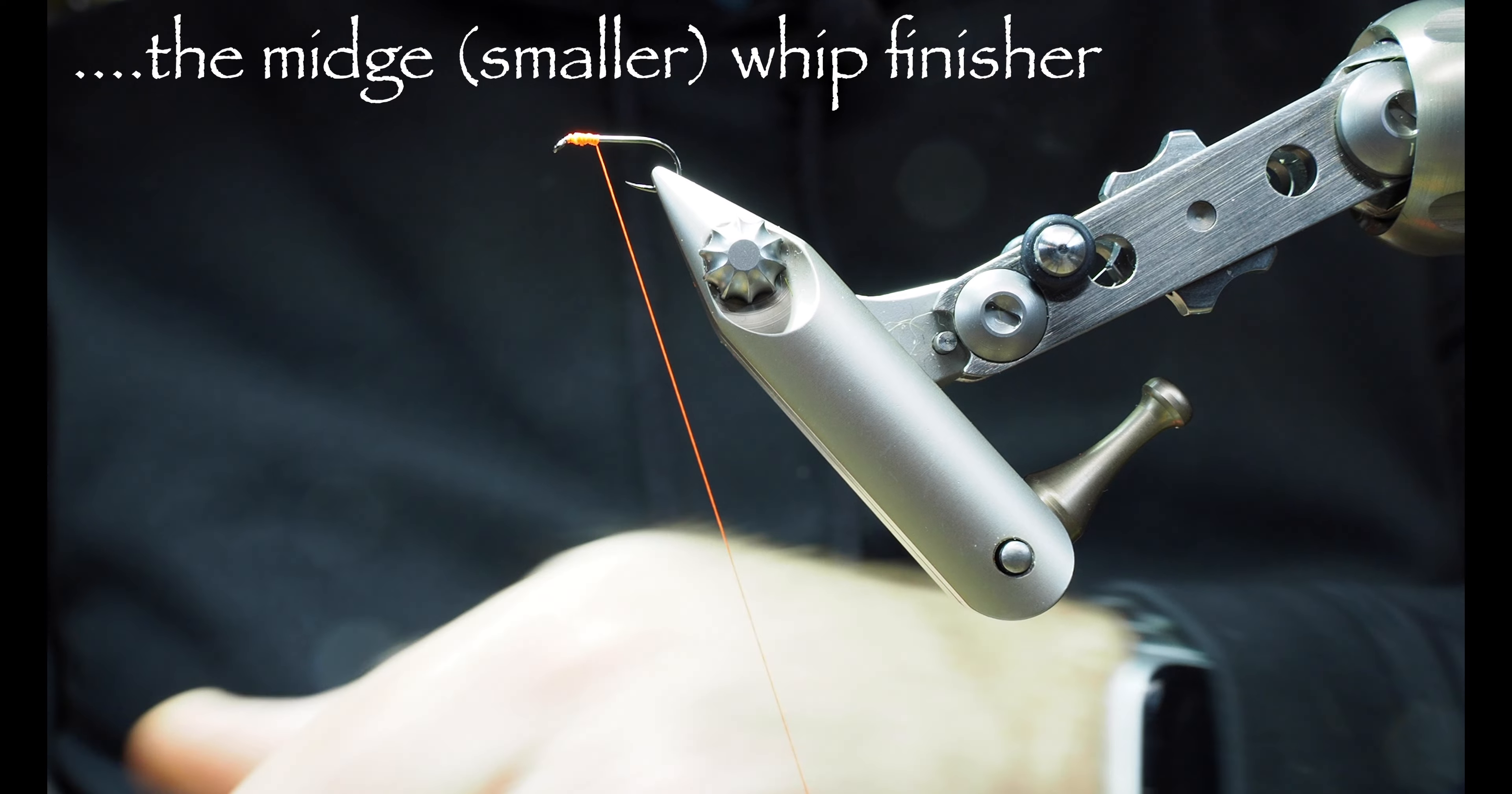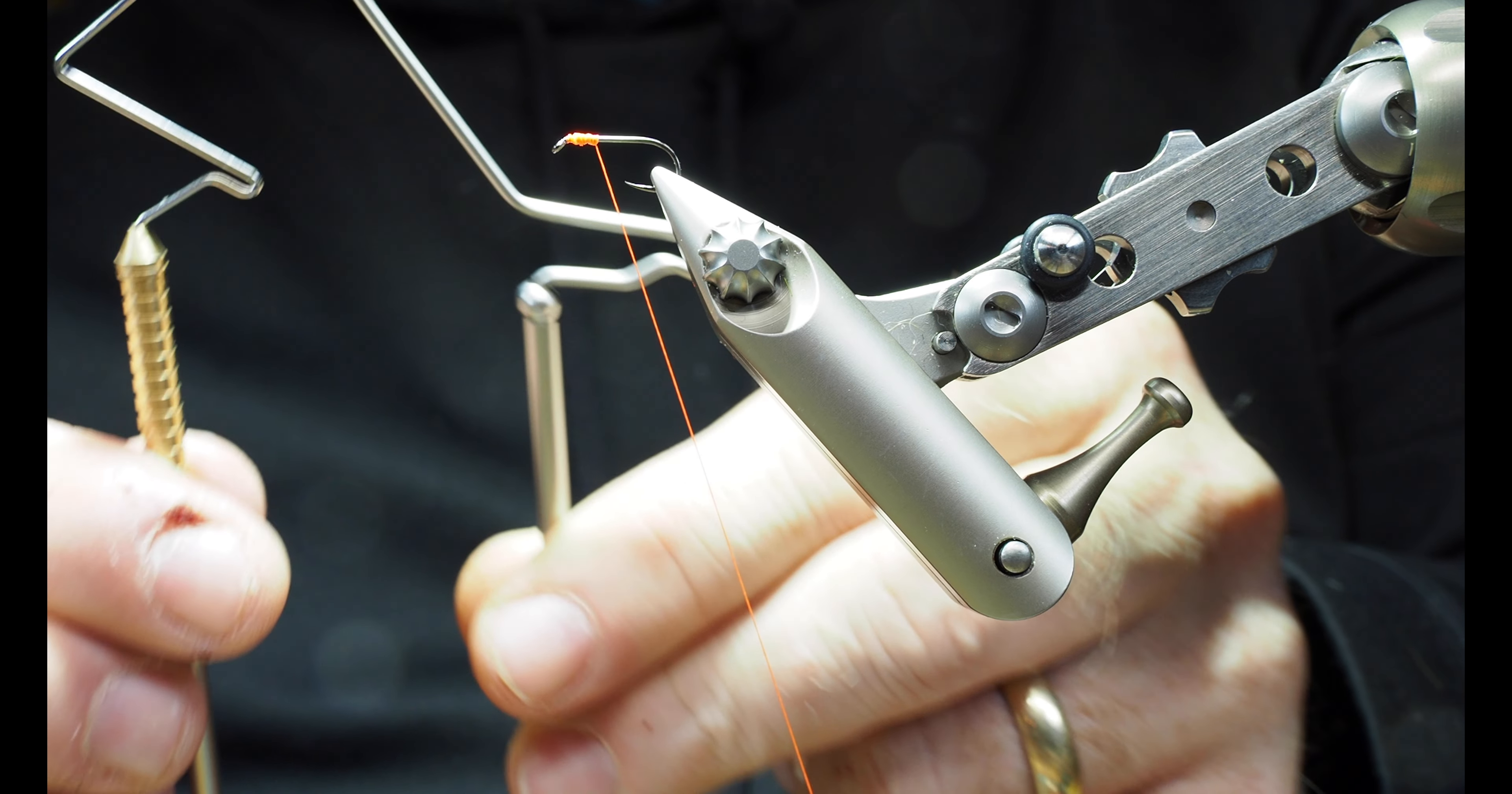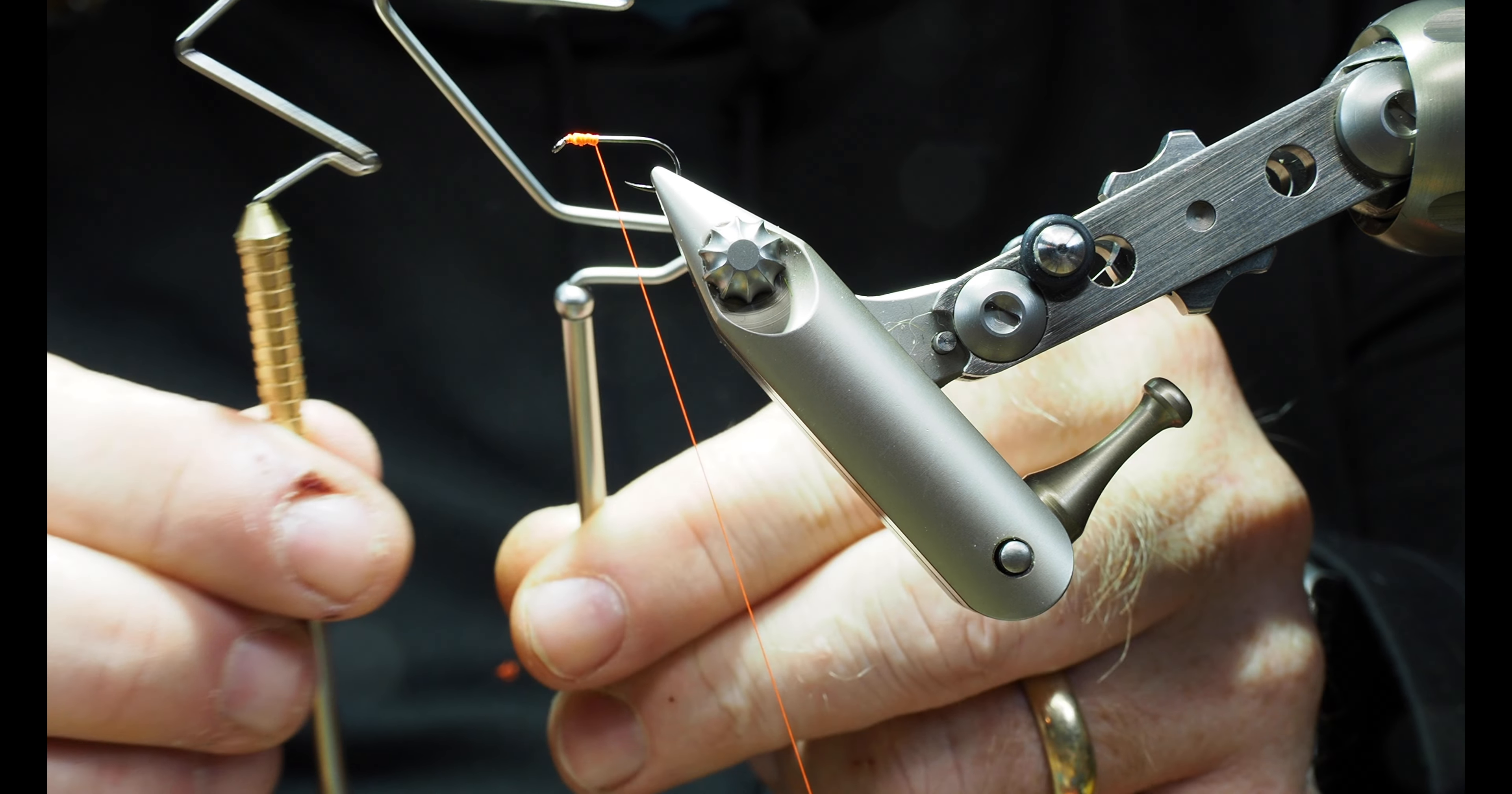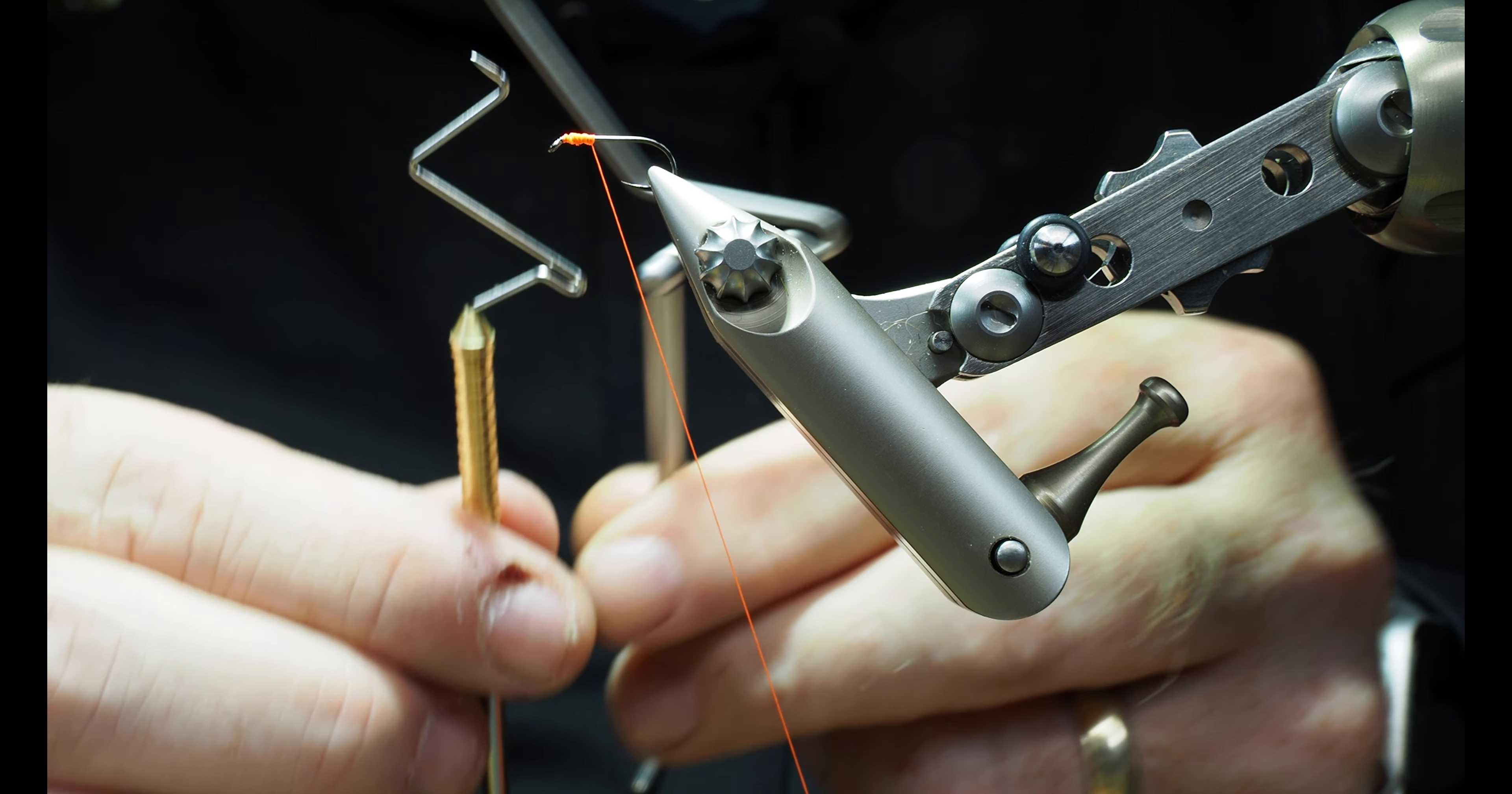And it's a whip finisher that's really made for much smaller flies. It allows you to get into some tight spaces. So I'm sure you can see the size difference here. This is my primary one. This one I'll use when I'm doing smaller flies, but they're going to function just the same even though they're different sizes.